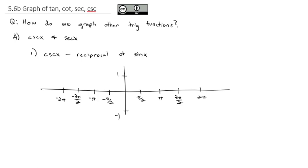Sine starts at 0 because the sine of 0 is 0, increases to the top, comes back to the middle, goes to the bottom, back to the middle, and repeats going the other direction. Connecting the dots, we get this nice sine function.